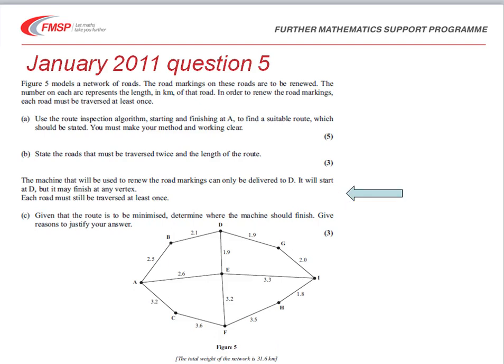Having done that part of the question, we are told that we can only have a delivery to D, but it can finish at any vertex. This is changing the situation to where we have two odd nodes. D is an odd node, so we will be allowed to finish at an odd node. Each road must still be traversed at least once. Given that we still need to minimize the route, determine where the machine should finish and give reasons.